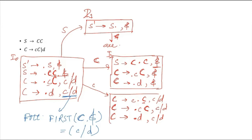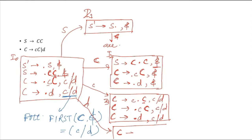This gives us item set I3. Then after dot d we can see that for d we will have a move, giving us capital C to d dot, with lookahead c or d. Nothing else to add here, so we name this I4.